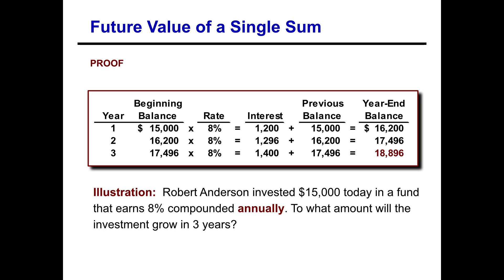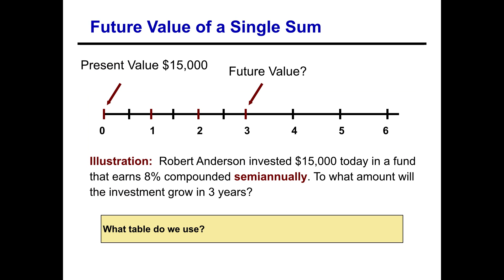Interest is not always compounded annually — it can be compounded monthly, quarterly, or semi-annually. Let's alter the Robert Anderson problem slightly: instead of compounding annually, we'll compound semi-annually. It's still a future value lump sum problem with $15,000 today at 8% over three years, but now compounded twice a year. Twice a year times three years gives us six periods. We go back to our future value of a lump sum table and look for six periods.